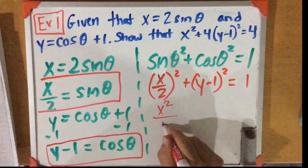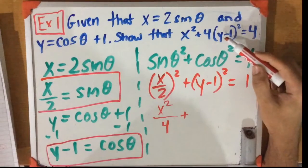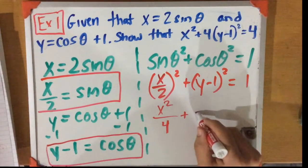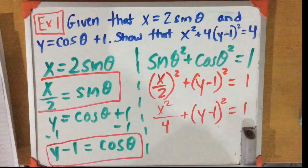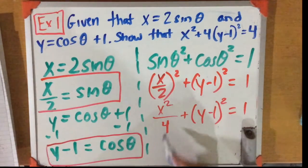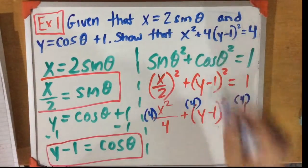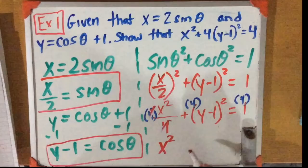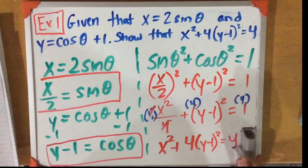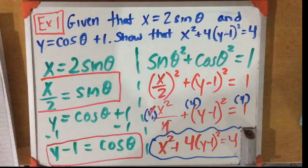This ends up being x squared over 4 plus (y minus 1) squared equals 1. Always reflect back on what you're trying to show — they haven't simplified here, so let's not simplify either. We have a fraction, so let's multiply everything by 4 to get rid of it. This cancels out, and we end up with x squared plus 4(y minus 1) squared equals 4. So we did actually prove what we needed to prove — using that trig identity to show this equation.